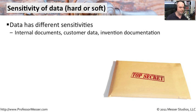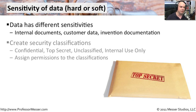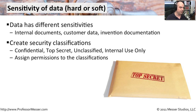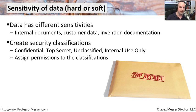Generally, we set up different categorizations for this data. We can call it confidential, top secret, unclassified, internal use only. You've seen these terms before, but your organization needs to determine what each one of those classifications means.